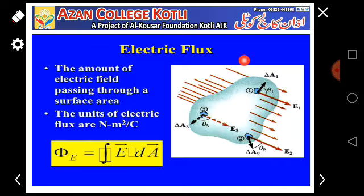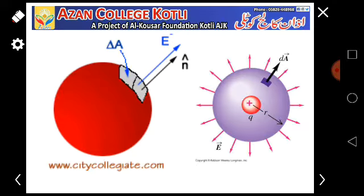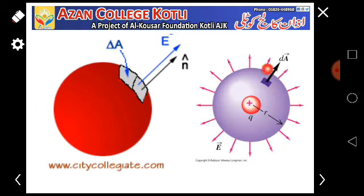Electric flux was discussed in the previous lecture: the amount of electric field passing through a surface area is called electric flux, and its unit is Newton meter squared per Coulomb. Now we have this complete surface which has small patch areas, electric fields, and a unit normal vector N which indicates the direction of A and E. The electric field is generated by the charge. If the surface is spherical and we take a small flat patch, its area is calculated from its length and width.